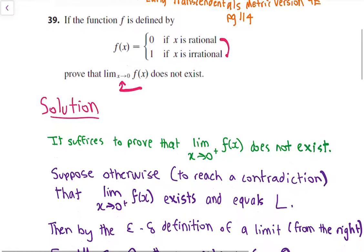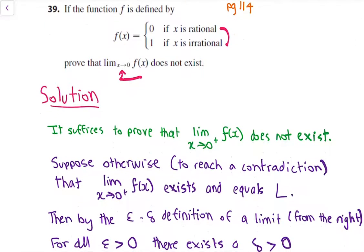Now we can have a look at the formal write-up of the solution. It suffices to prove that just the limit from the right-hand side as x approaches 0+ of f(x) does not exist. We can use proof by contradiction — so let's assume that the limit as x approaches 0 from the right-hand side of f(x) exists and equals the value L. We're going to use the epsilon-delta definition of a limit from the right-hand side.